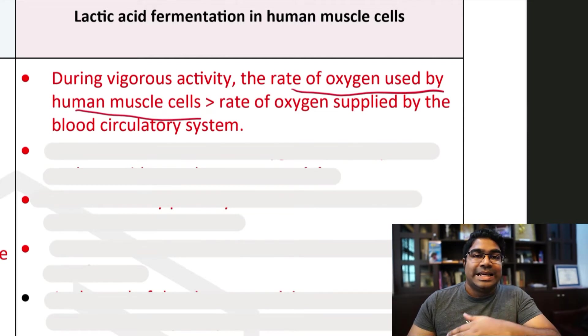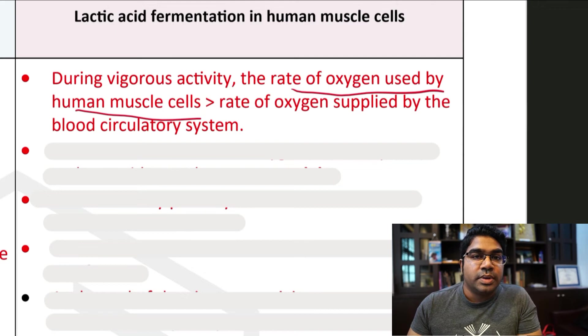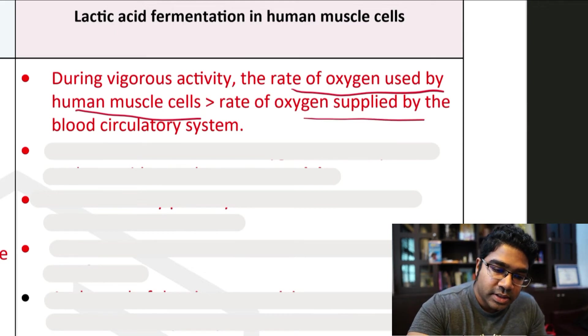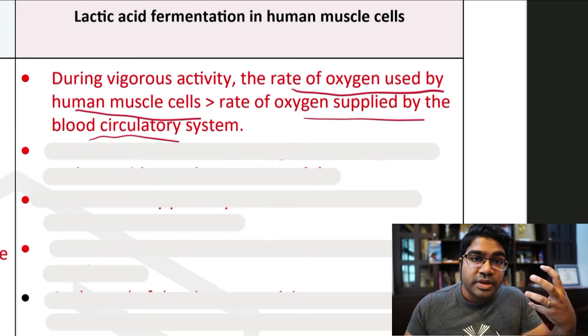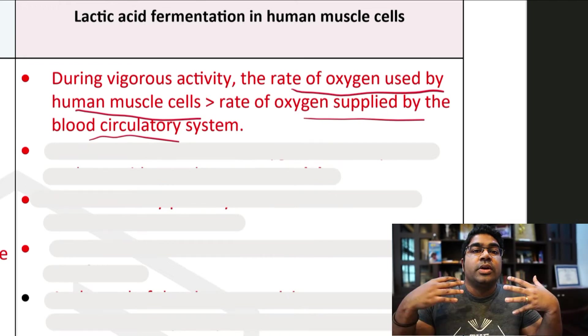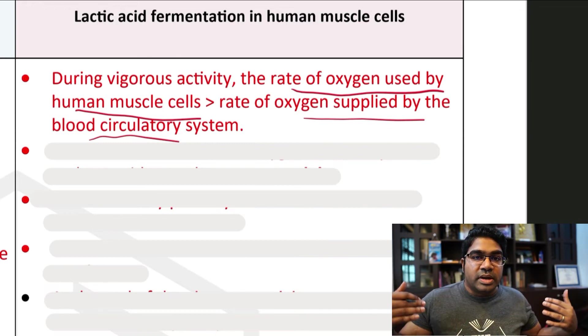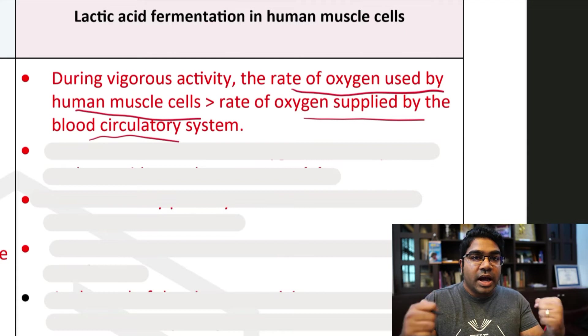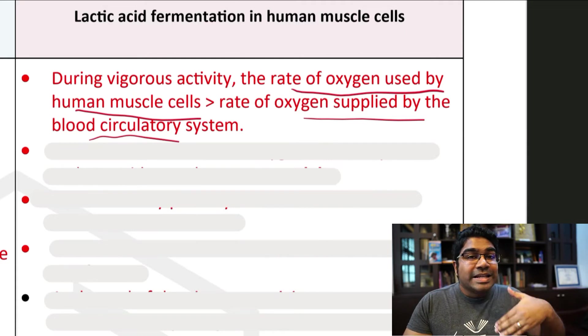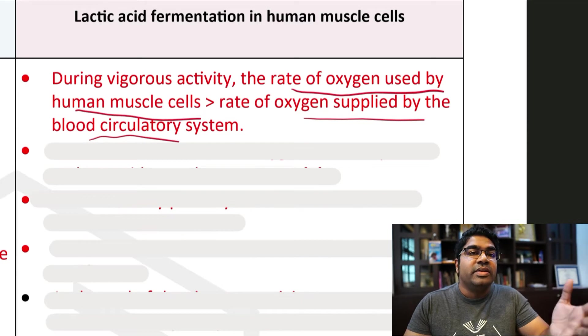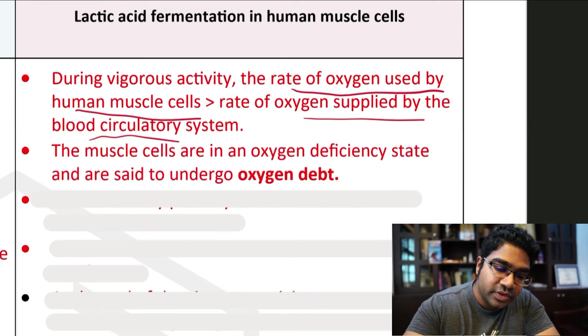And so once the rate of oxygen being used up cannot be supported by the rate of oxygen supplied by the circulatory system, the blood cannot supply enough nutrients and oxygen to the muscle cells in order to carry out that high rate of energy being produced and oxygen being used up, then this creates a condition where there is a lack of oxygen.